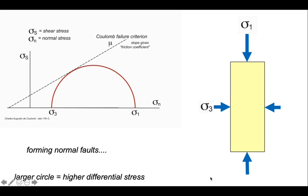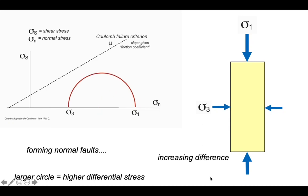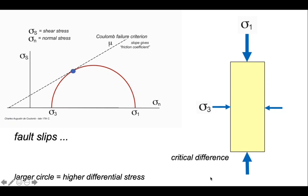Let's go back to the Mohr circle. In the situation developed earlier with sigma 1 vertical and sigma 3 horizontal, the Mohr circle just abuts the failure criterion, so normal faults are about to move — they're able to do so because the circle is large enough to intersect the failure envelope. When sigma 1 and sigma 3 are almost the same, the differential stress is very small and we're a long way from the failure envelope, so faults aren't going to slip. As we release sigma 3, the mean stress reduces but the circle enlarges because the difference between sigma 1 and sigma 3 increases, until it intersects the failure criterion and a fault will slip. So the higher the differential stress, the greater the chance of fault slip. Reducing horizontal stress increases the propensity for normal faulting.